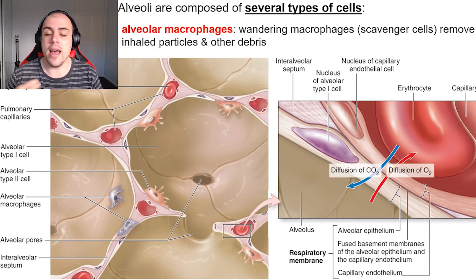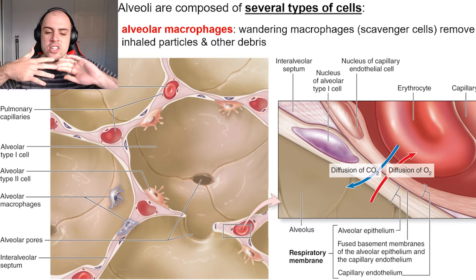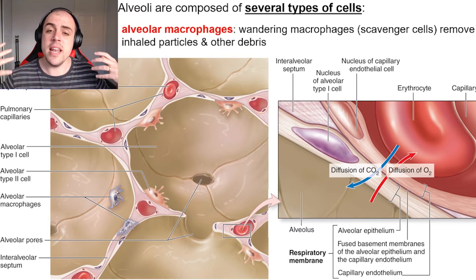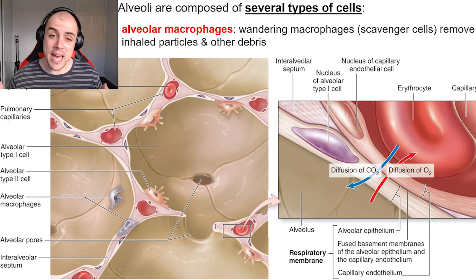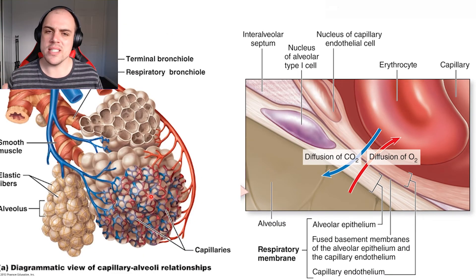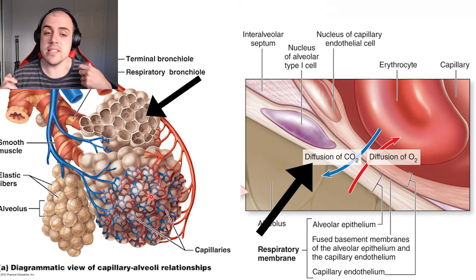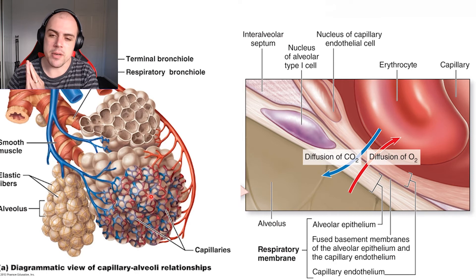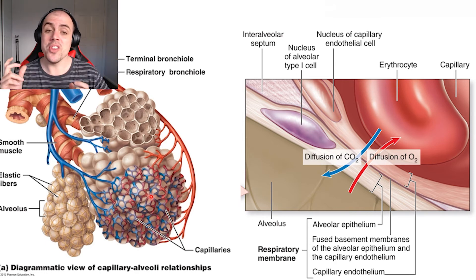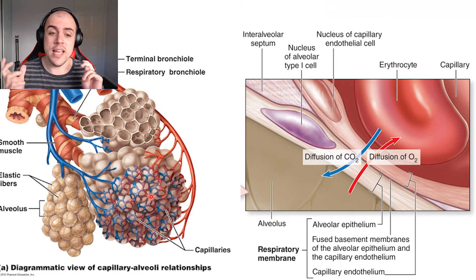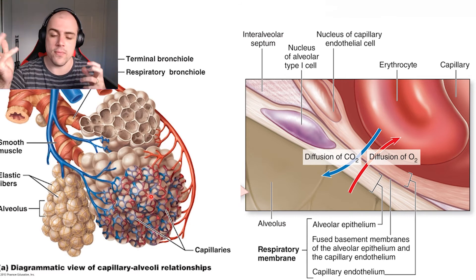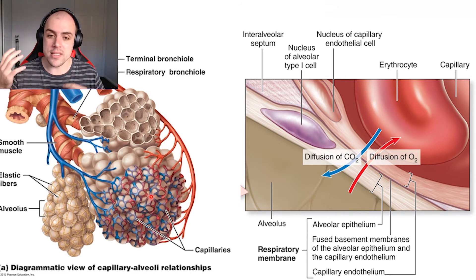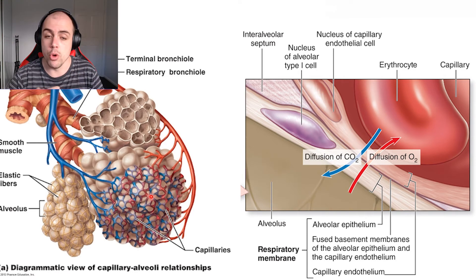The third and final cell type are our alveolar macrophages. These macrophages are the police force, the cleaners, the security — the all-in-one. If there's any debris, inhaled particles, or anything like that which has managed to make its way down into the alveoli, these macrophages will help to clean it up. Also important to keep in mind is that the membrane of the capillary and the membrane of the simple squamous cell in the alveoli are fused together to form a basement membrane, holding the capillaries securely in place to facilitate gas movement.